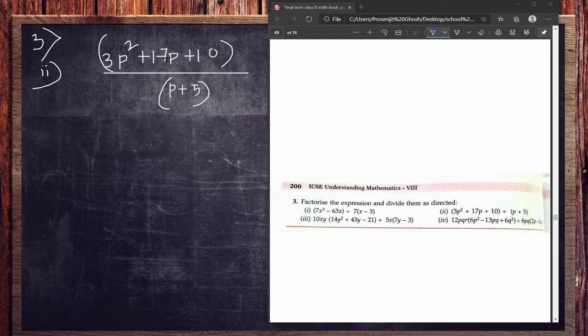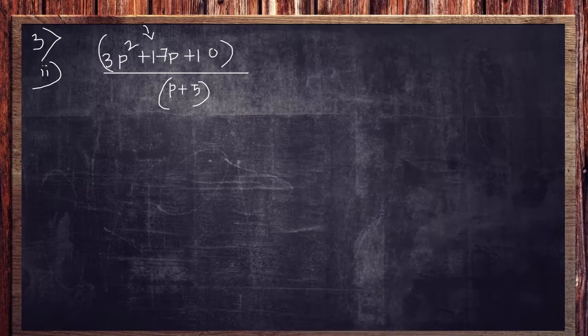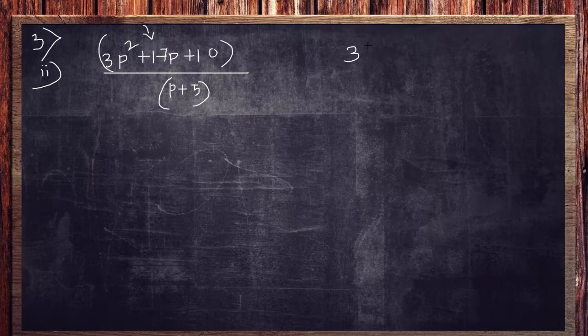But this portion cannot be factorized by any identity or any other method. So we need the middle terms method over here. And how we can do that? Let me show you. Okay, what I just told you, in the middle terms method all you need is the value of a which is 3 and the value of c which is 10. Let's break it up.